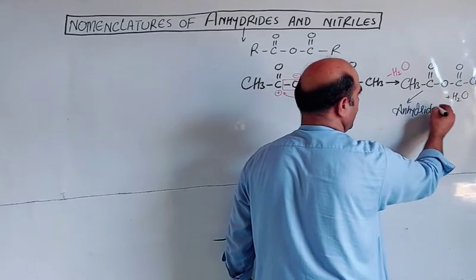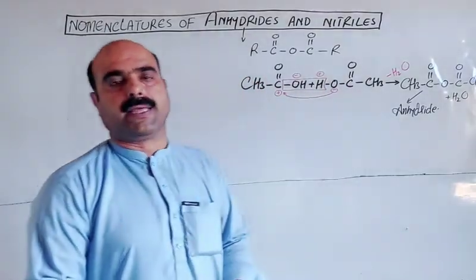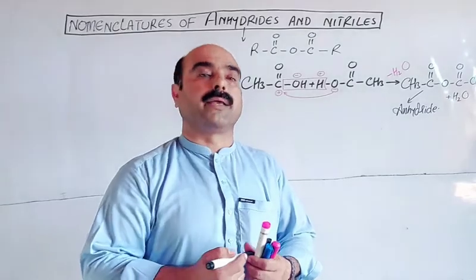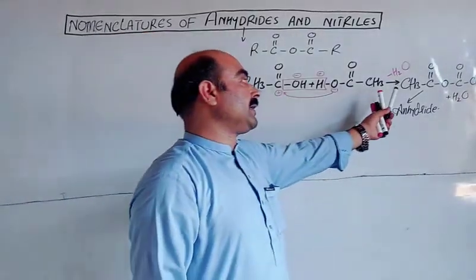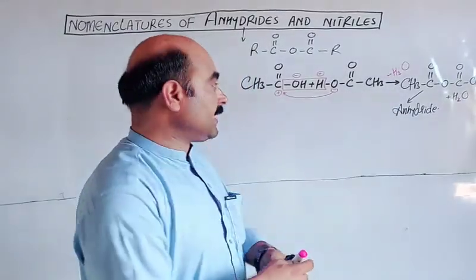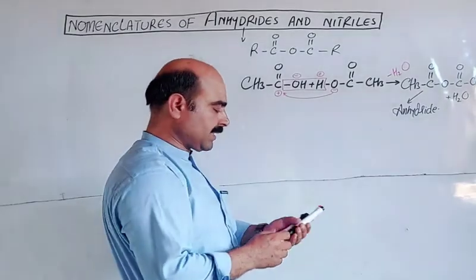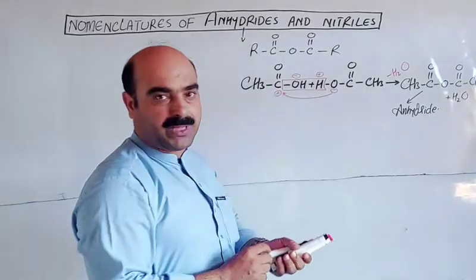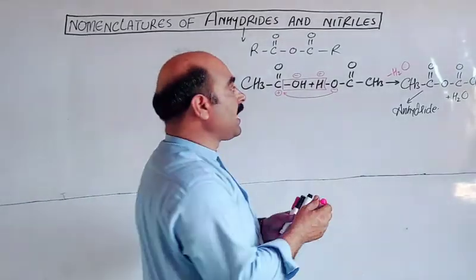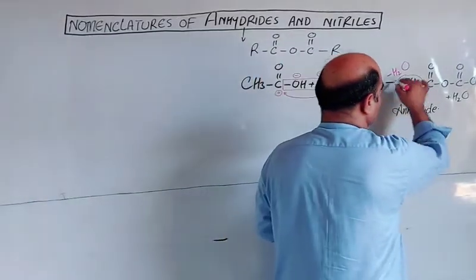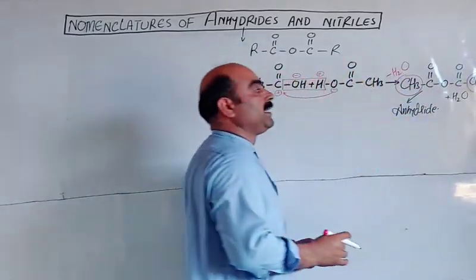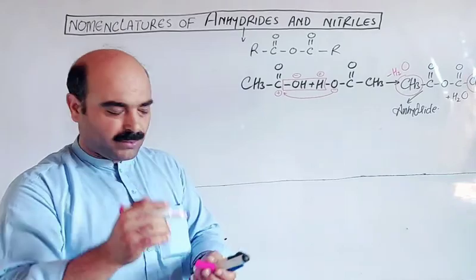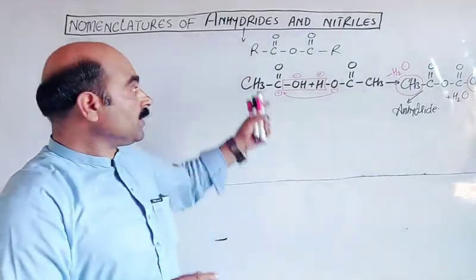When the same two carboxylic acids combine, we have a simple anhydride — both alkyl groups on either side are the same. When the alkyl groups are different on the two sides, we have a mixed anhydride.